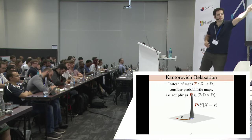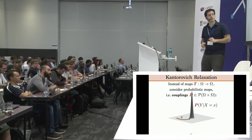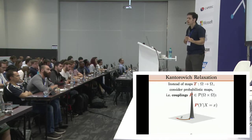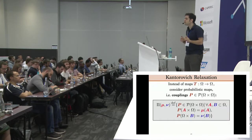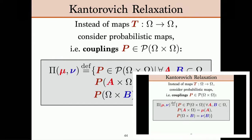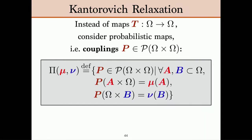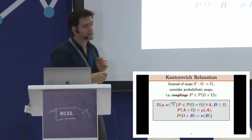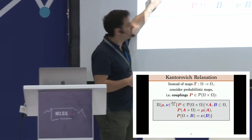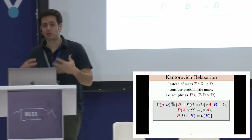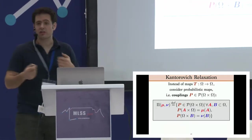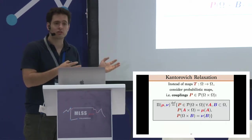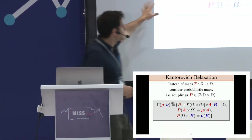Instead of a deterministic map, you get a probabilistic map. A convenient way to parameterize those probabilistic maps is a coupling: a probability distribution on the product space omega × omega. The constraint that we transport mu to nu is the marginal constraint — we consider all joint probability distributions on omega × omega such that the first marginal is mu and the second marginal is nu.